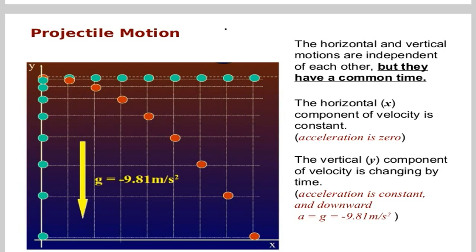The horizontal component of velocity is constant, that is acceleration is zero. The vertical component of velocity is changing by time, so that is acceleration due to gravity, giving us g = 9.81, and the minus because it is pointing downward. The unit is meter per second squared.